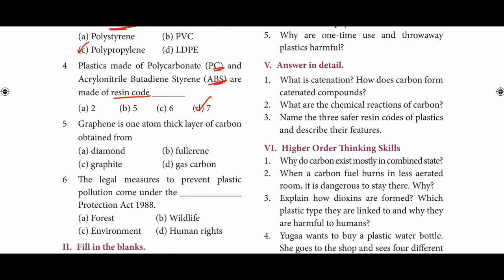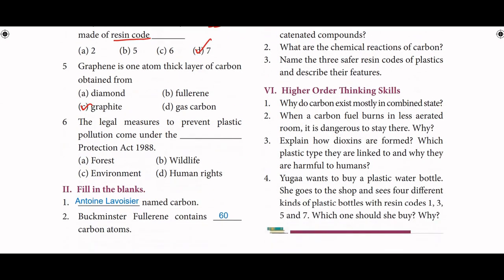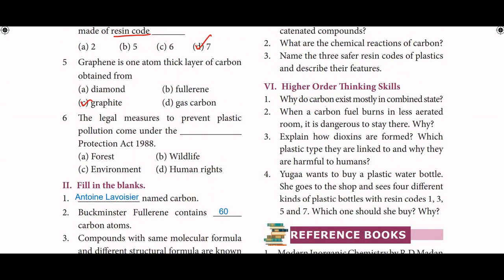Next: graphene is one atom thick layer of carbon obtained from graphite. Sixth one: the legal measures to prevent plastic pollution come under the Environment Protection Act 1988.